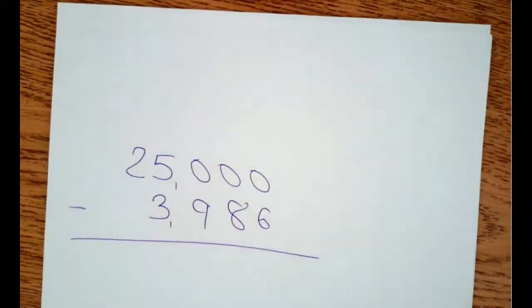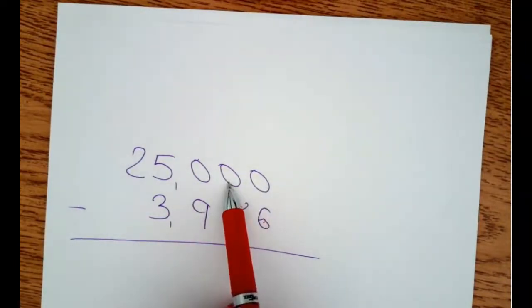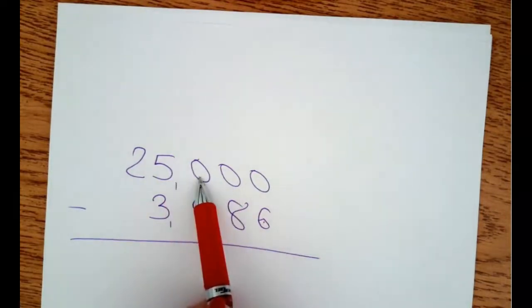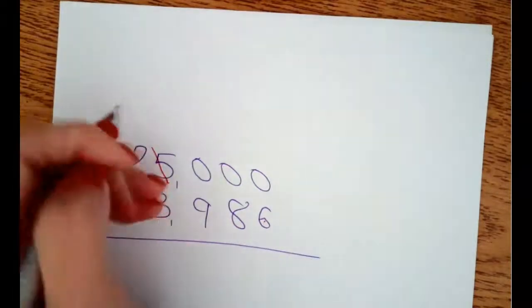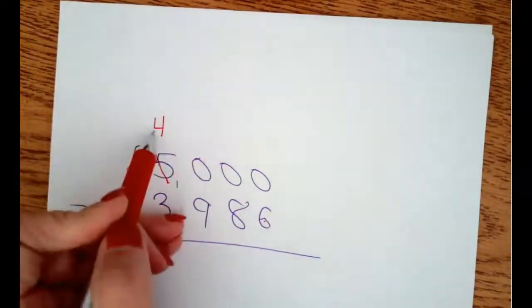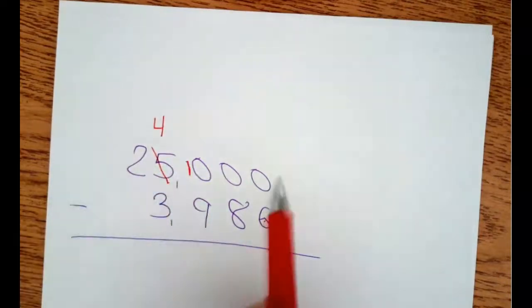We're subtracting across zeros. Start here. Zero minus six. Can I do it? No. Does your neighbor have one that you can take? No. Does this neighbor have one? No. This neighbor does. So you take one from the five. He becomes a four. And the one that you took has to go right directly next to him, to that neighbor.